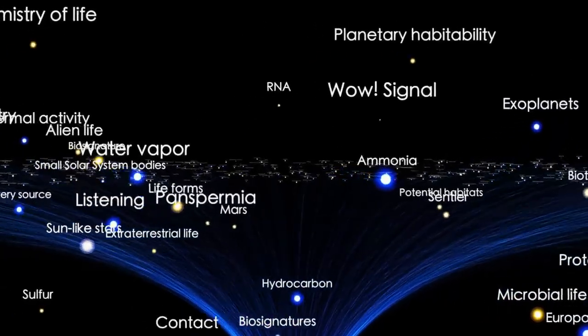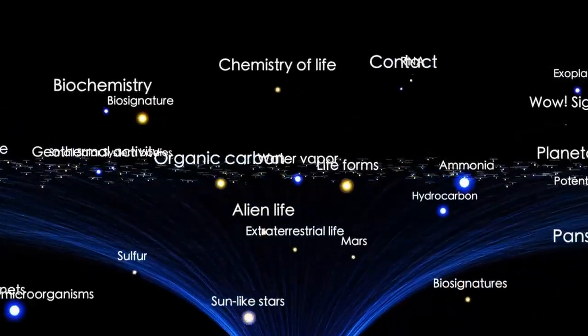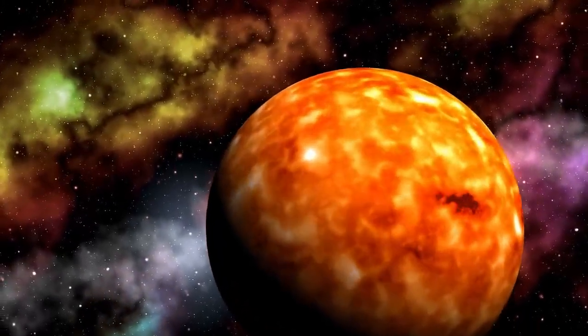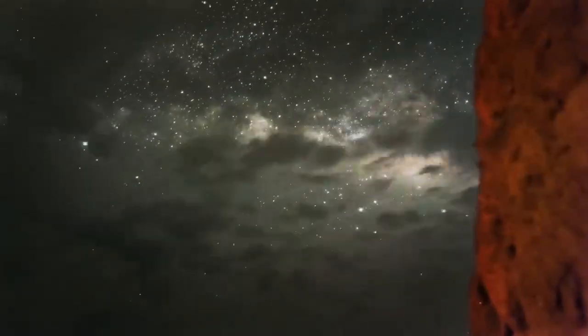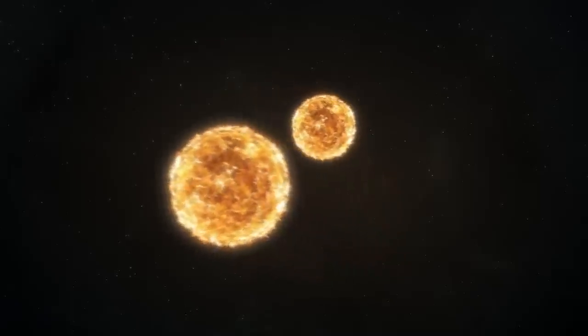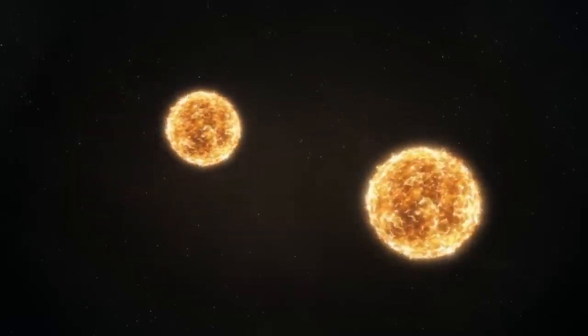Betelgeuse, one of the most fascinating stars in our night sky, is located approximately 725 light years away from Earth. This means that the light we observe from it today actually began its journey toward us around 725 years ago. In other words, when we look at Betelgeuse through telescopes or even with the naked eye, we are witnessing the star as it was centuries ago, not as it exists in the present moment.